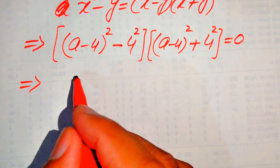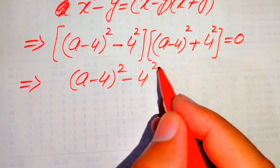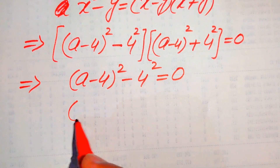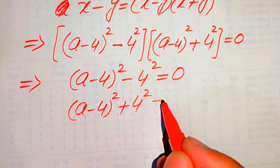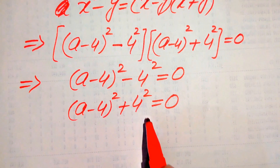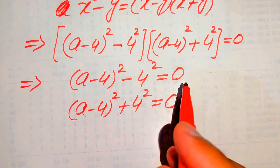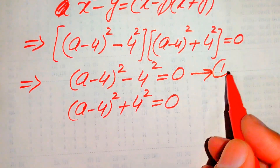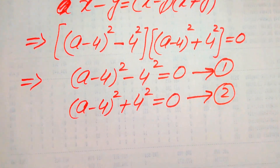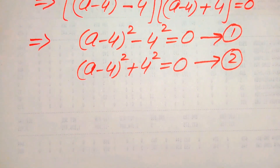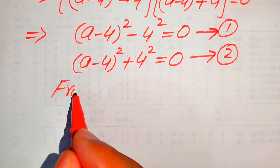We now divide this into two cases. Case one: (a-4)² - 4² = 0, which we call equation number one. Case two: (a-4)² + 4² = 0, which we call equation number two. We will solve these two equations to find all values of a.